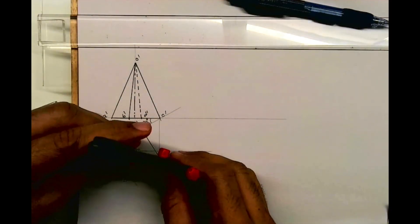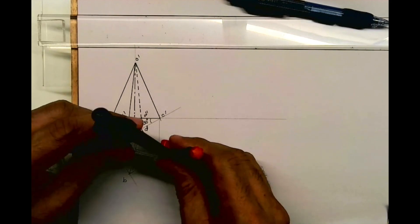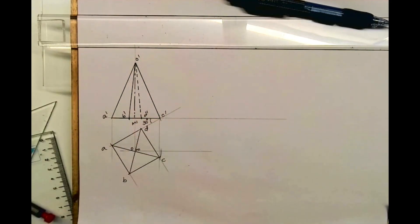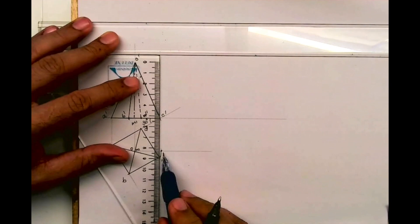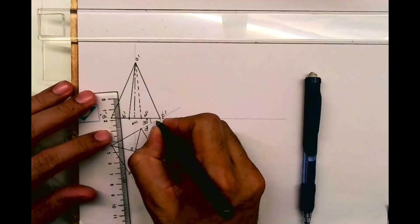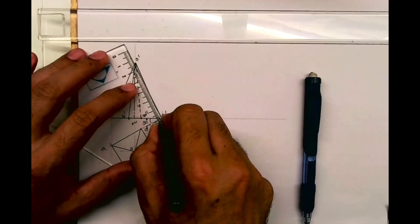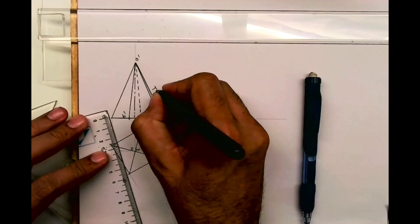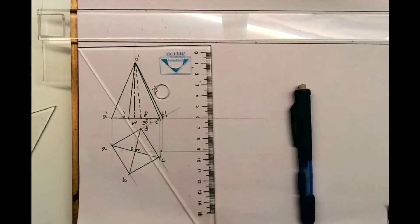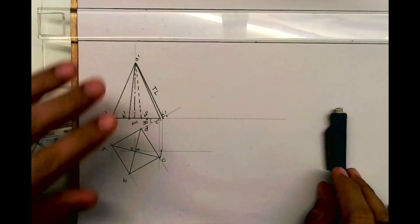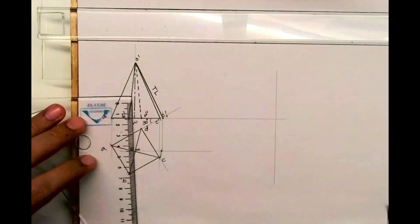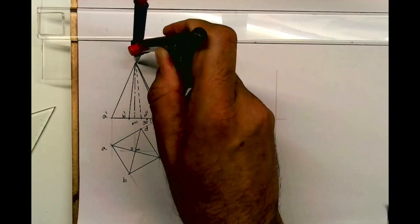We need to draw it horizontal then project up. So this is the point C1 dash, that is true length. Now take true length to draw development. We need to take true length, we'll take O to C1 dash, we'll cut and rotate.